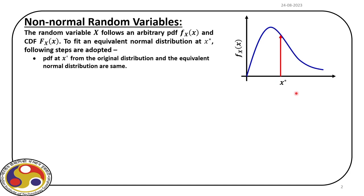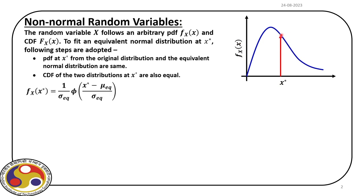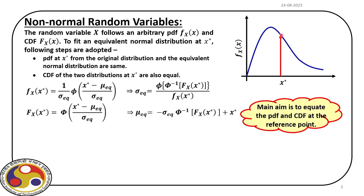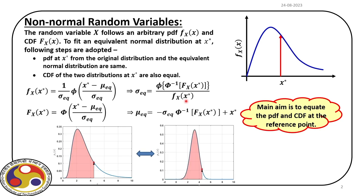Let us quickly go through once more how we apply this equivalent normalization. We have a PDF for any given random variable defined by x. At a particular point x-star, we fit a normal distribution, and for that we need to find out mean and standard deviation. For that reason, we developed two equations. We discussed this multiple times, solved problems, and developed MATLAB code.